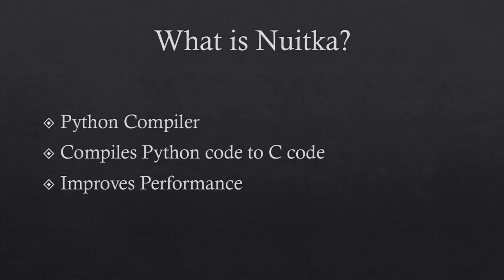Nuitka is a Python compiler. It compiles Python code to binary, and then compiles that binary code with a C compiler and generates C source code. This is a very radical approach — out of all the major libraries to generate EXEs in Python, Nuitka stands out. All the others bundle the Python interpreter into the EXE, but Nuitka is different. It basically generates an EXE the same way that C or C++ do, because it generates C code and then compiles that. This also improves performance of your application.